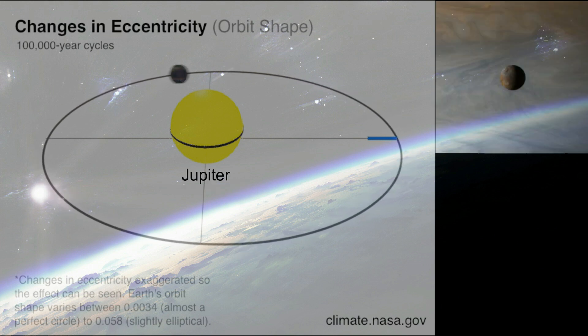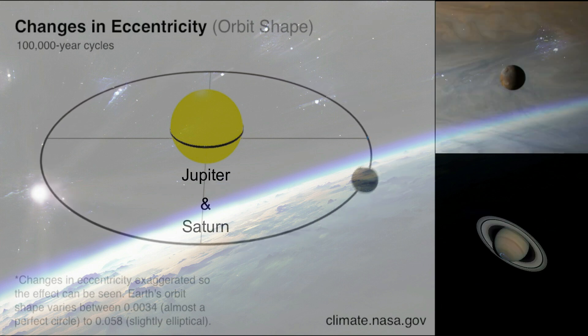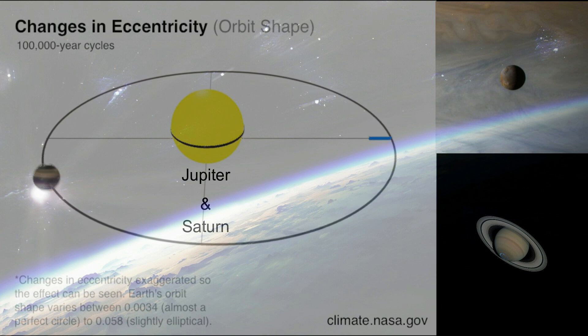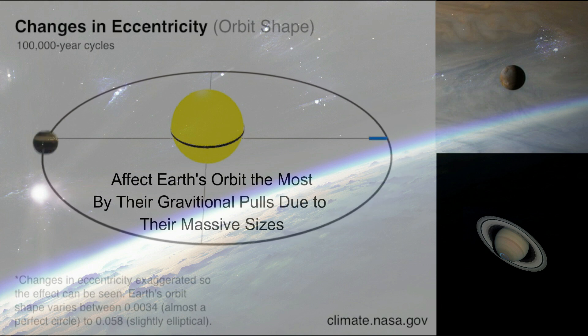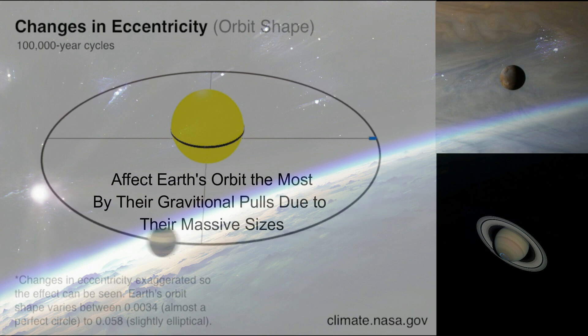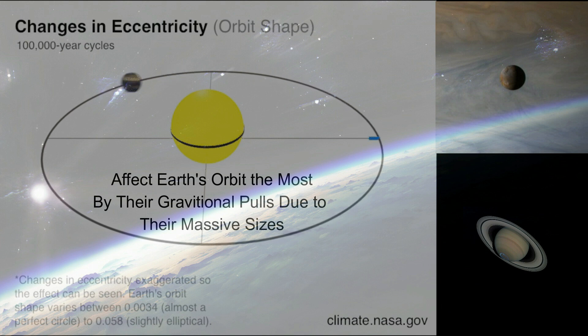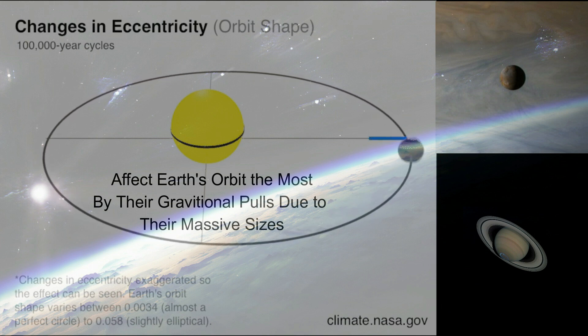Jupiter and Saturn affect Earth's orbit the most through their gravitational pulls, due to their massive sizes.